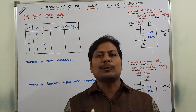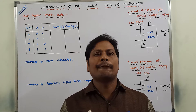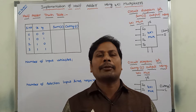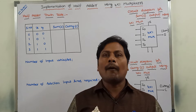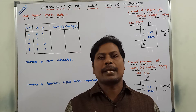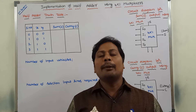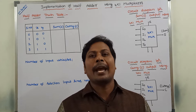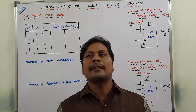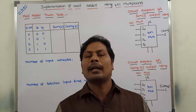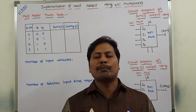Hi friends, welcome back to our YouTube channel. Today we have to discuss about implementation of half adder using 4 by 1 multiplexer in digital electronics, digital logic design, and switching theory and logic design courses. In the previous video, we already discussed implementation of half subtractor using 4 by 1 and 2 by 1 multiplexers, and implementation of full adder and full subtractor using 8 by 1 and 4 by 1 multiplexers. Now in this video, how to implement half adder using 4 by 1 multiplexer.